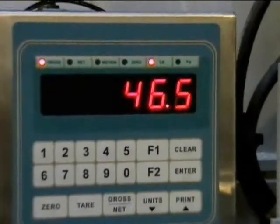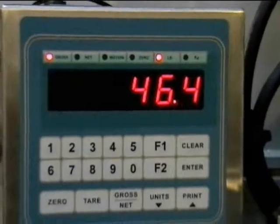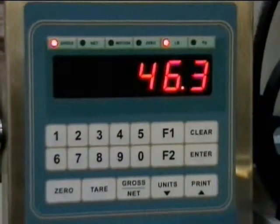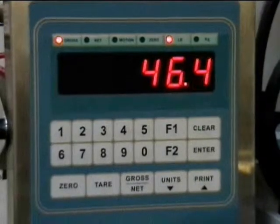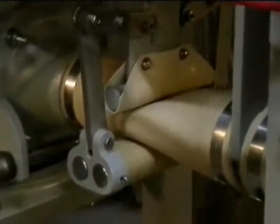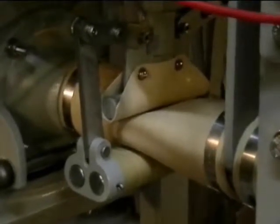By placing weight on the scale, we simulate a bag filling cycle, and as the weight on the scale reaches the value of set point one, the machine shifts to dribble mode, and the dual speed cutoff closes halfway, restricting the flow of product into the bag.